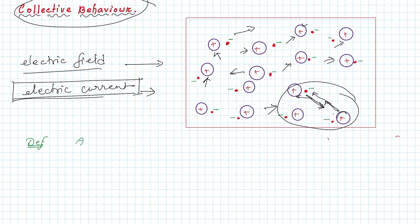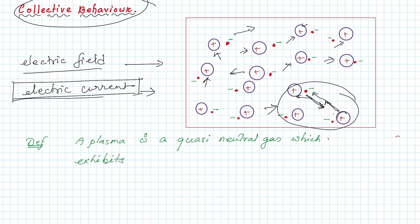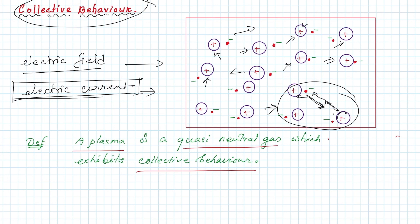So we can define plasma as: plasma is a quasi-neutral gas that exhibits collective behavior. In the next video, we are going to discuss Debye shielding.